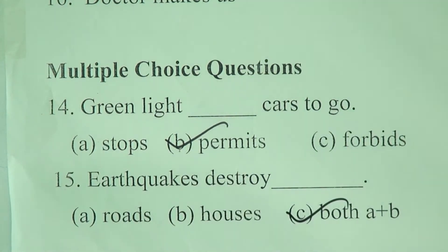MCQ number 14: 'Green light dash cars to go.' The answer is — green light permits cars to go. Number 15: 'Earthquakes destroy — (a) roads, (b) houses, (c) both a and b.' The correct answer is c — both a and b. Earthquakes destroy both roads and houses.